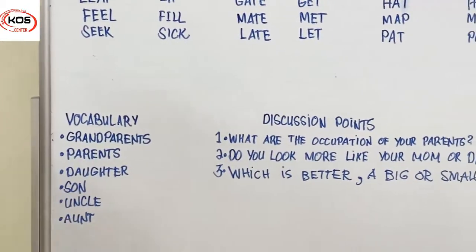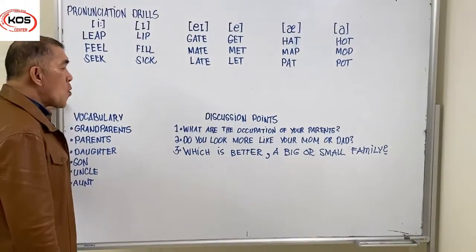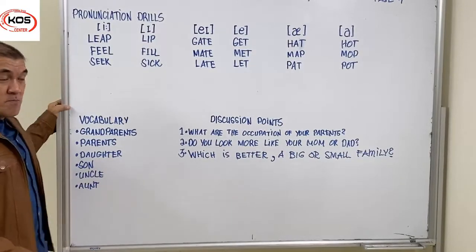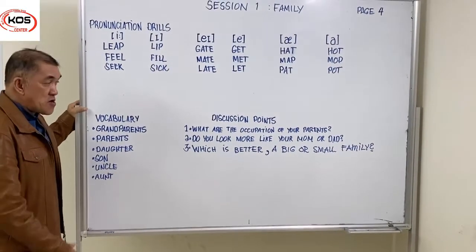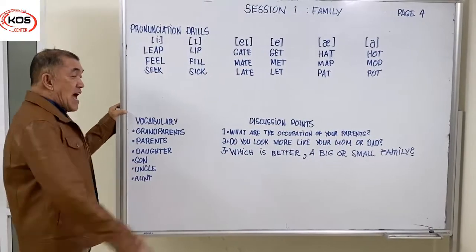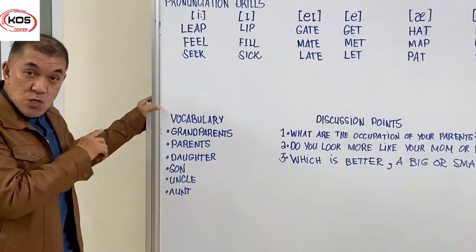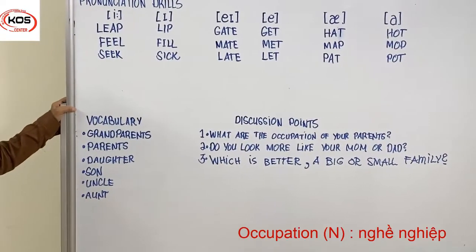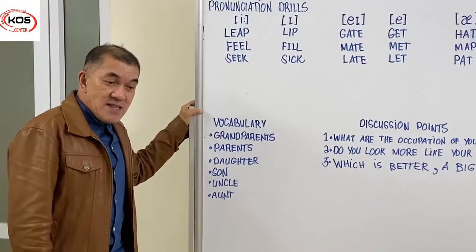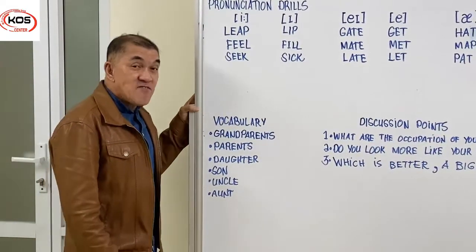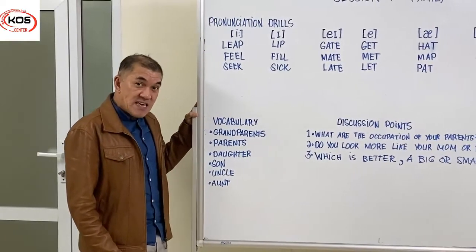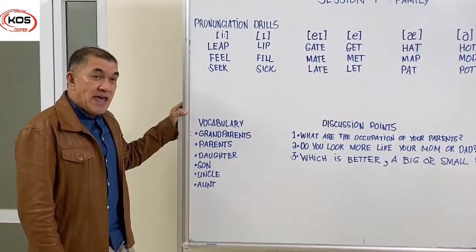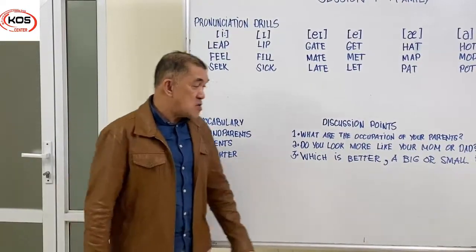Let's move on to the third part: the discussion points. Number one: What are the occupations of your parents? Number two: Do you look more like your mom or dad? Number three: Which is better, a big or small family? I'll answer question one: My parents both have their jobs. My dad works as a supervisor for a TV company, and my mom works as a nanny. Pick any question you want to answer and send it over to this email. Bye for now.